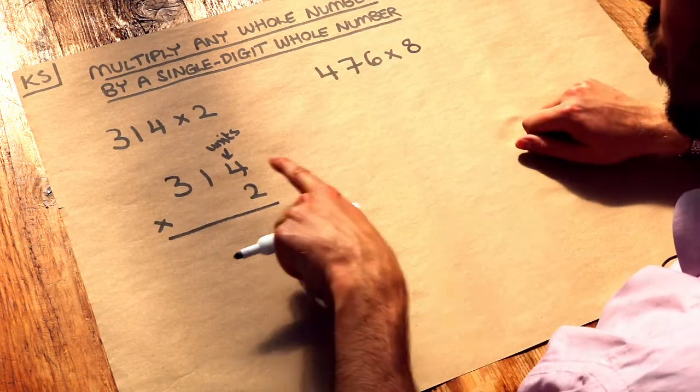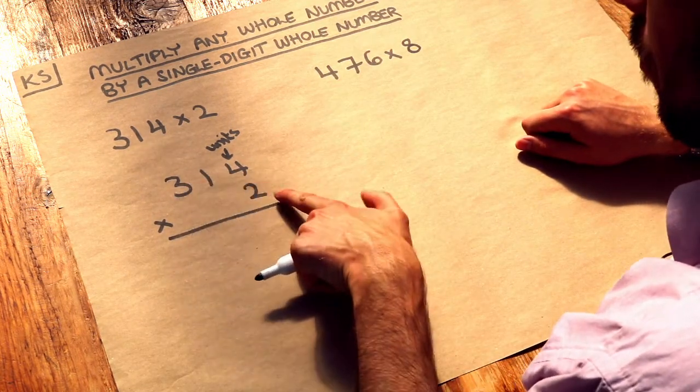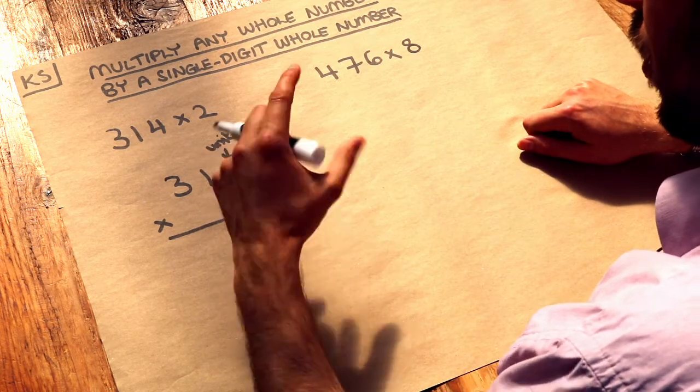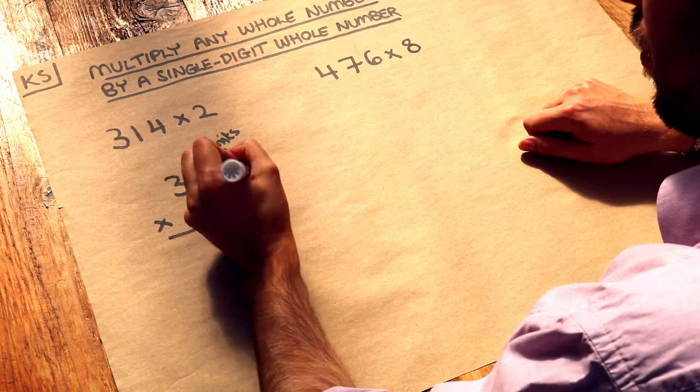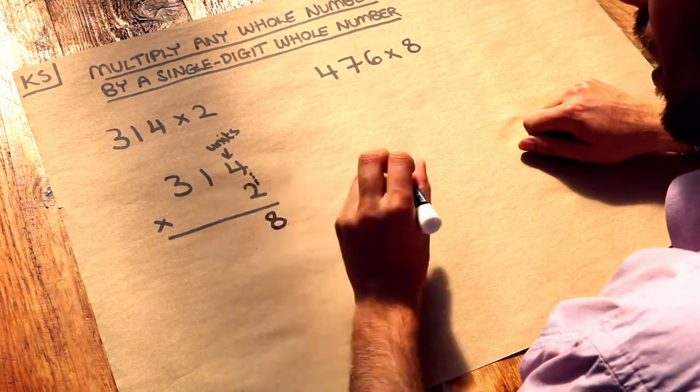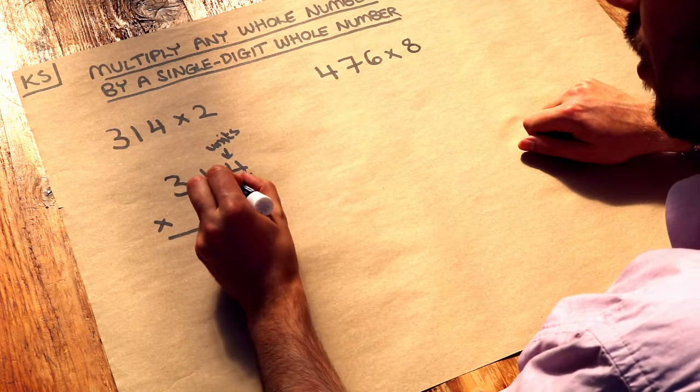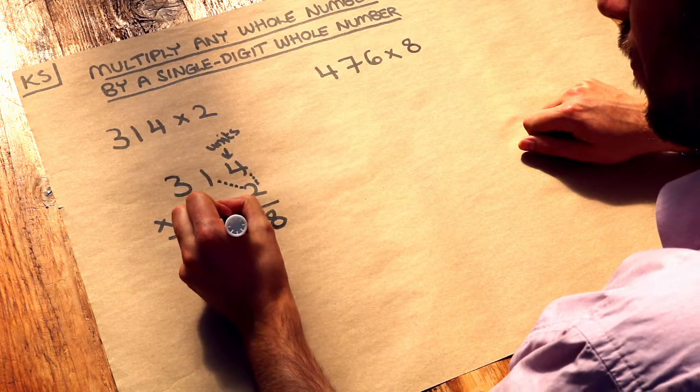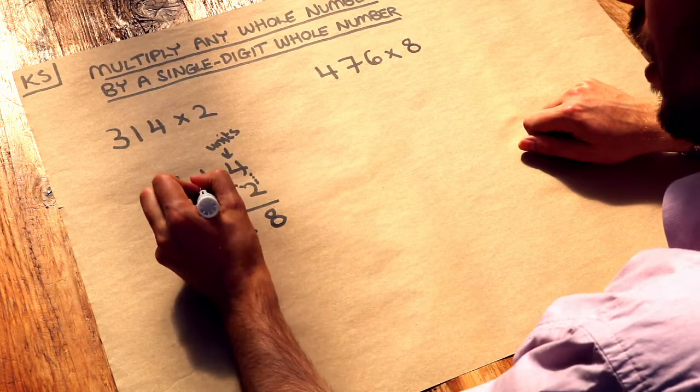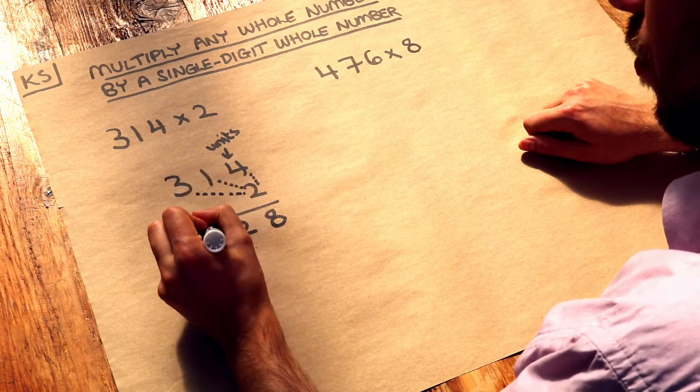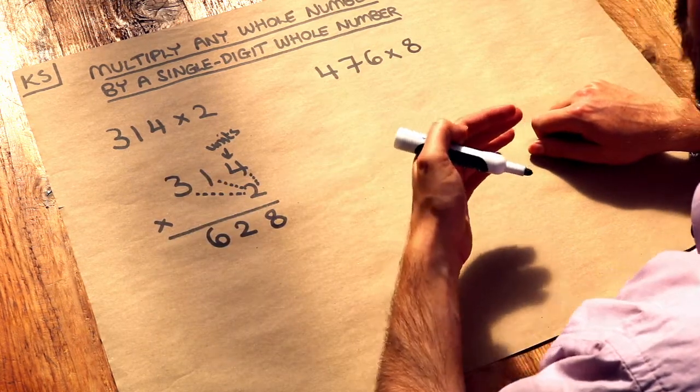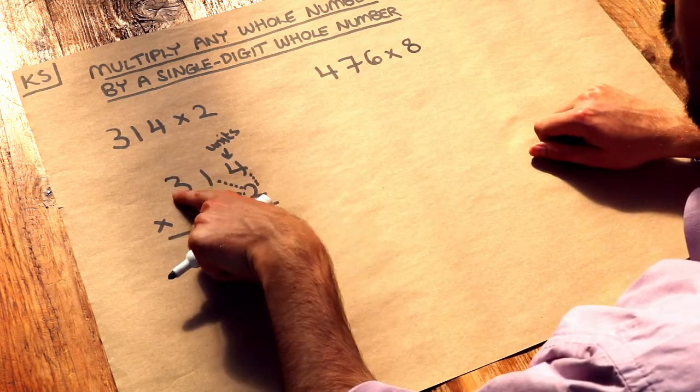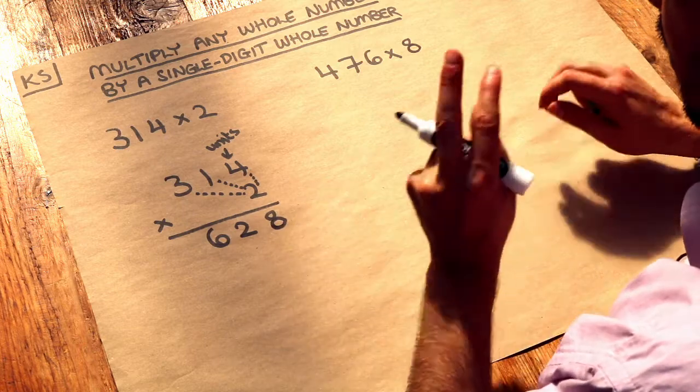Now what we do is we do each of these digits from right to left multiplied by that single digit here. So this 4 is going to get multiplied by the 2, and 4 times 2 is 8. And then going right to left we'd now do the 1 multiplied by that 2 which is 2, and finally we do the 3 multiplied by that 2 which is 6. And this question was relatively simple because there was no carries. Every time we did like 4 times 2, 1 times 2, 3 times 2, we ended up with a single digit number.